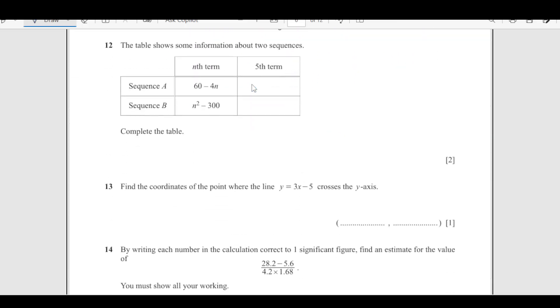Number 12: the table shows some information about two sequences, sequence A and sequence B. Complete the table. The fifth term we are looking for, n is 5. 60 minus 4 times 5, 60 minus 20, that is 40. Then here, n is 5, 5 squared minus 300, 25 minus 300, which is negative 275.